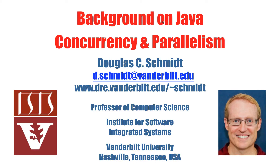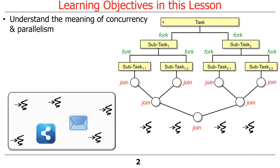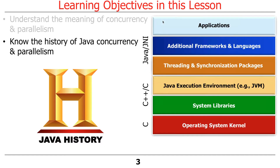What I'd like to do now is give you a little bit of background on concurrency and parallelism, particularly as it applies to Java. The first part of the discussion is more broad, and then we'll narrow it in on Java. I'm going to explain what these concepts mean — what does it mean to be concurrent, what does it mean to be parallel? These terms are often used interchangeably, but they're actually not the same thing, although they're related. I'll also give you a brief history of concurrency and parallelism in Java.